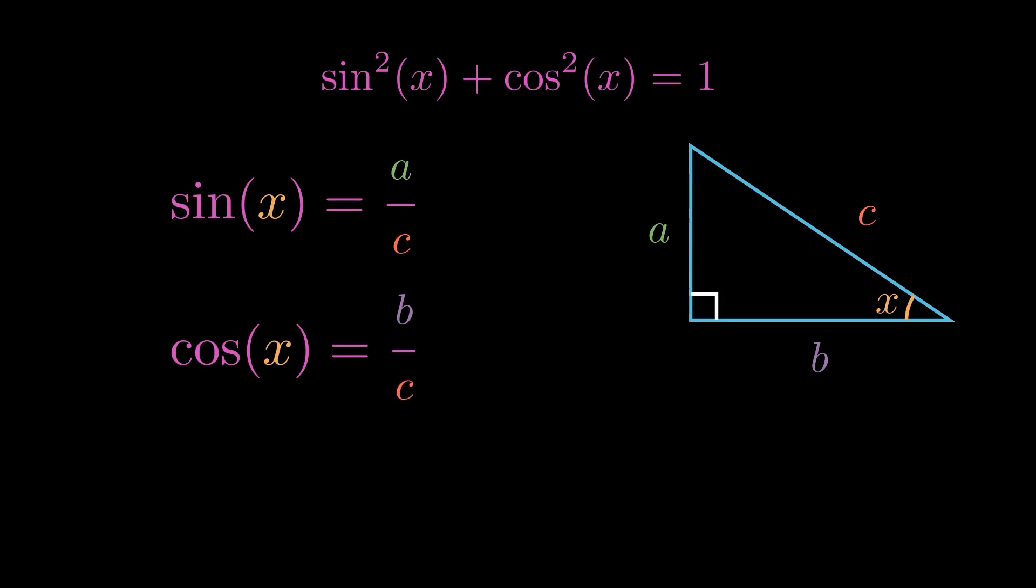But we really don't care about sine and cosine. We care about sine squared and cosine squared. So let's square both sides. We then get A squared over C squared. And similarly, for the next one, we get B squared over C squared.